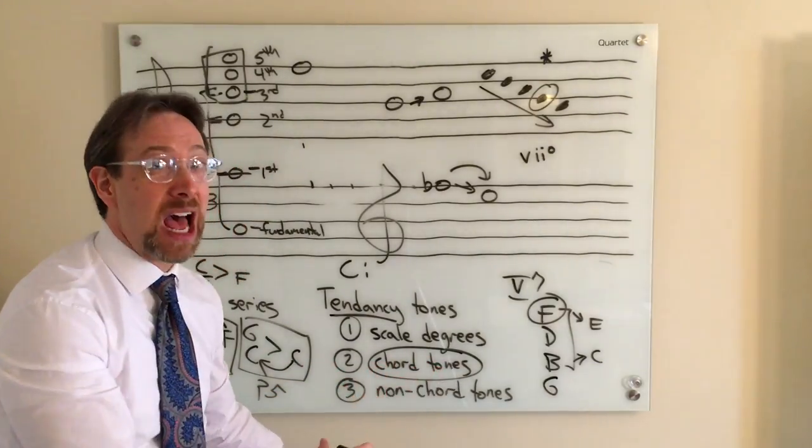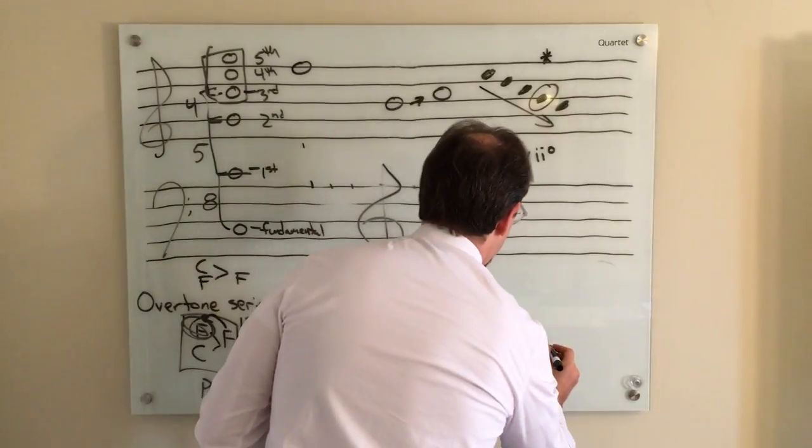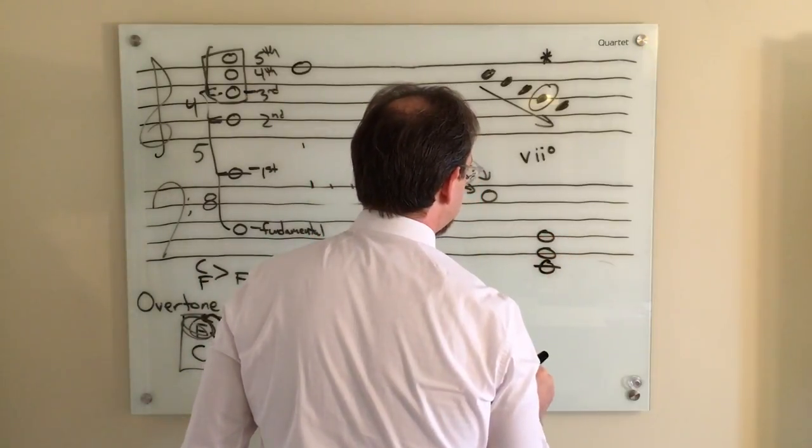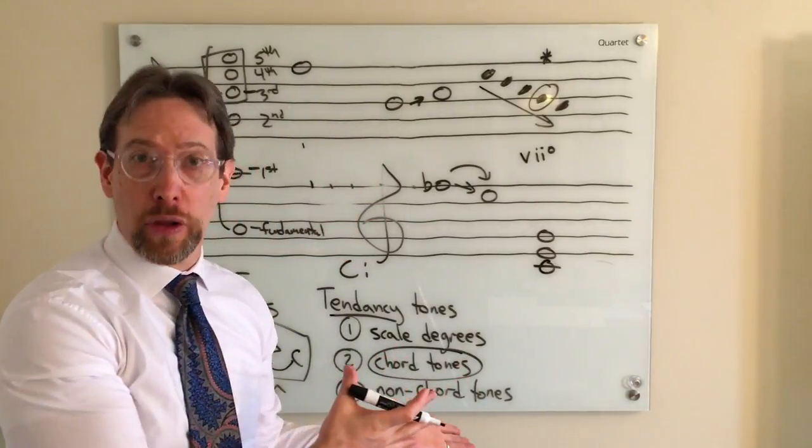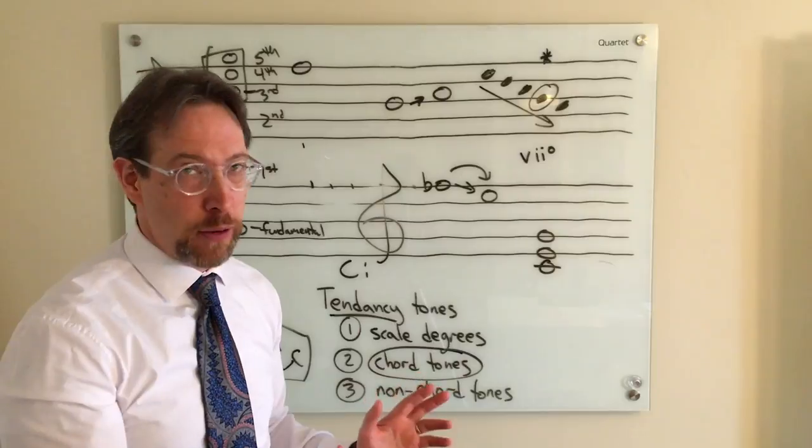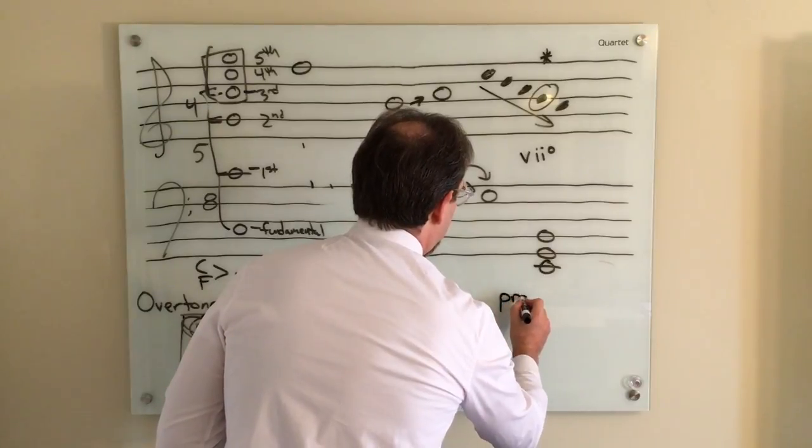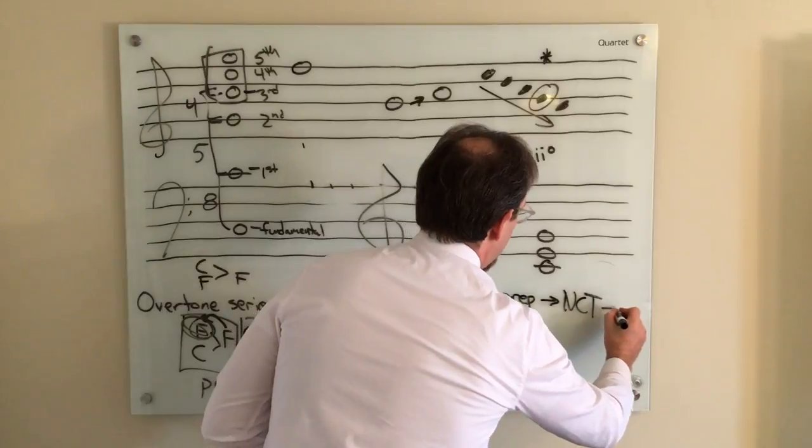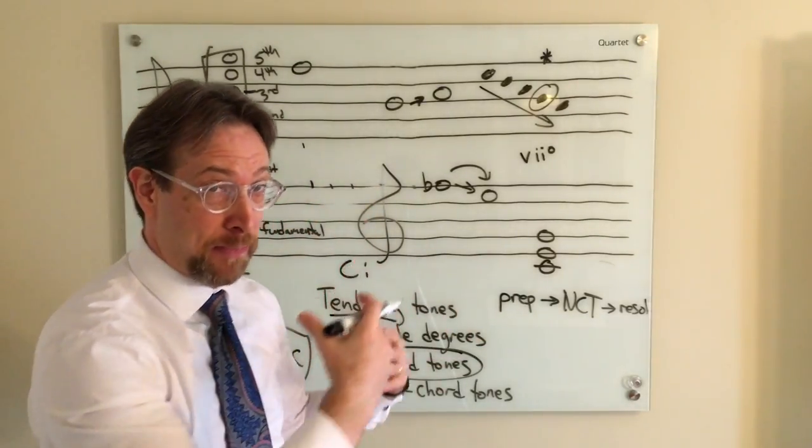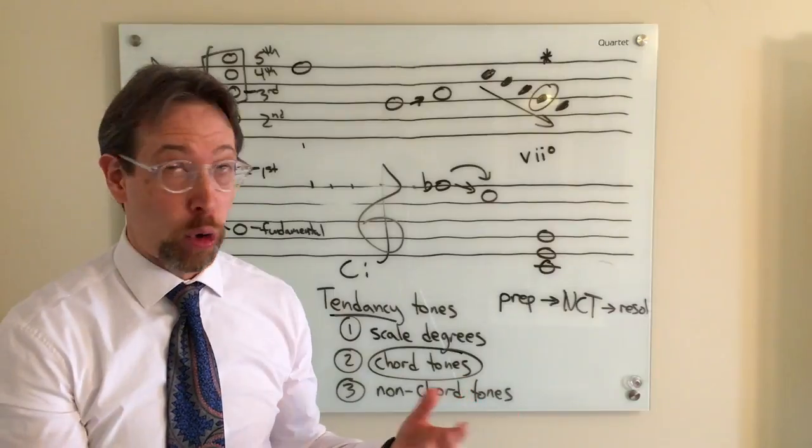Now, what about tendency tones in terms of being a non chord tone? What if you have a note that is not part of the chord? So let's say we have our triad is C E G. And you have another note. Well, it falls under the rules of non chord tones. And I have a number of lessons about that. So you can go and review as needed, but they follow the rules of non chord tones, which means that they have must have some kind of preparation. You then have your non chord tone and it must have some type of resolution. It's like a three part process. How do you get into the non chord tone? Non chord tone. How do you get out of it so that it doesn't sound random or like a wrong note?